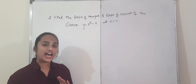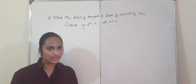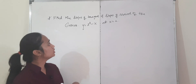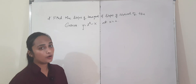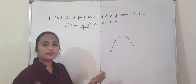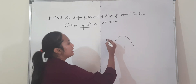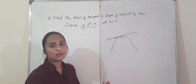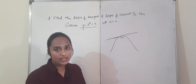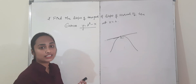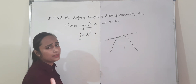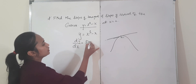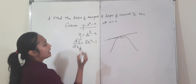The next topic is slope of tangents and slope of normals. This may be asked for 2 marks or 3 marks. Find the slope of the tangent and slope of the normal of the curve y = x³ − x. If I draw a tangent at a point on the curve — a tangent is a line which meets the curve at only one point — we need to find its slope using differentiation. dy/dx = 3x² − 1. x³ differentiates to 3x², and x differentiates to 1.